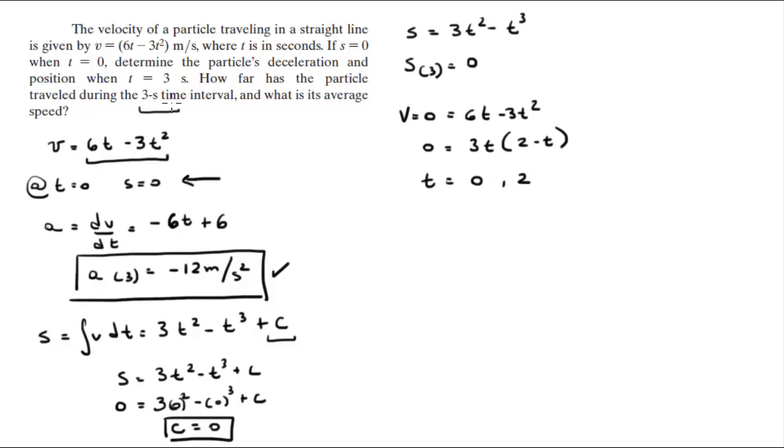They're asking us from 0 to 3 how much has the particle traveled. We need to find the position at 0, at 2, and at 3 because we have a zero in between. When t is 0, s is 0. When t is 2, s is 4. When t is 3, s is 0 again. So from 0 to 4 we move 4, and from 4 to 0 we move 4. When we add them up together, the total distance traveled by the particle is 8 meters.